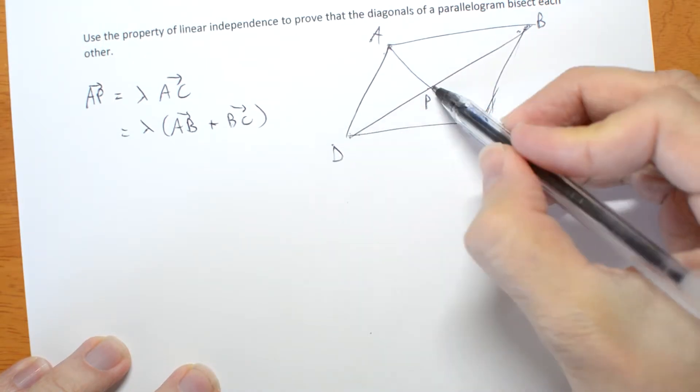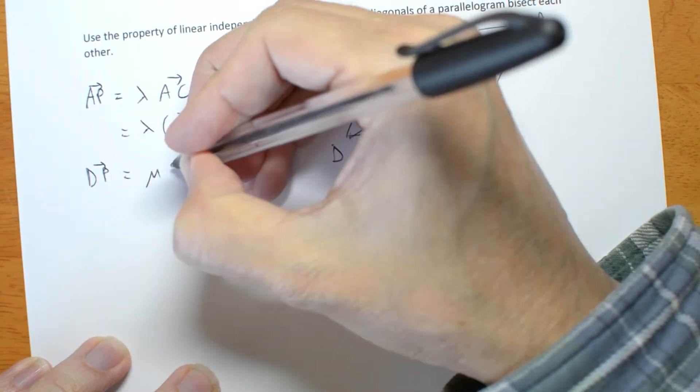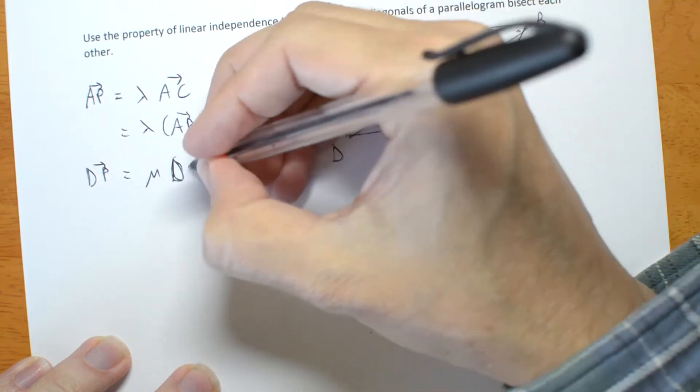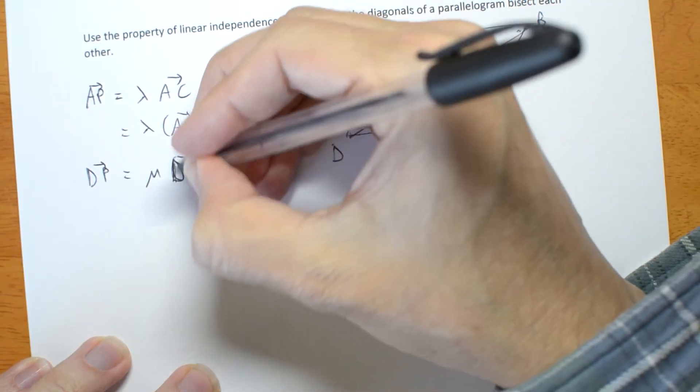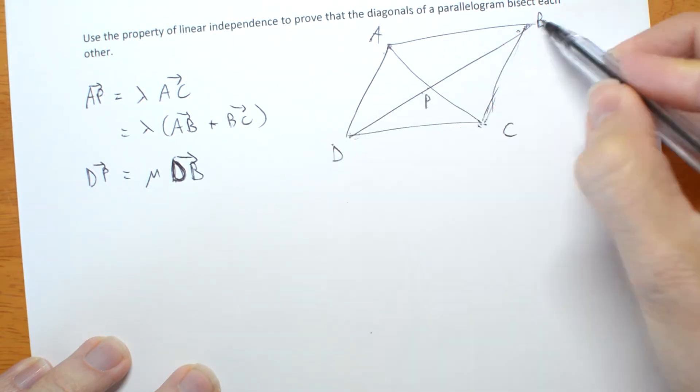What about this one? DP is a different multiple of its one. I didn't need a bracket yet. DB. You're going to need a bracket next line. DP is some multiple of DB.